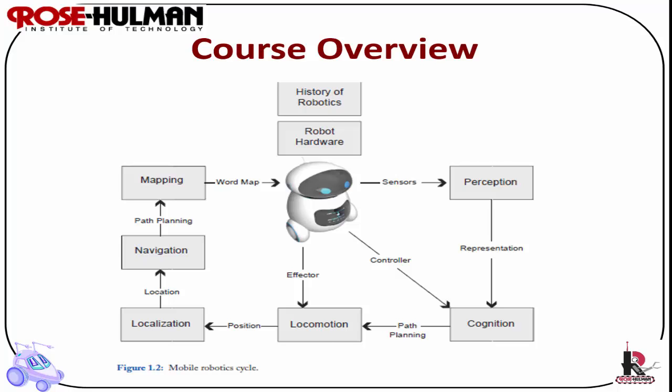Right now we're in the history of robotics and the robot hardware. Then we transition to sensors, perception and representation, as well as cognition and AI. And then we move to locomotion, localization, navigation and mapping. I'm proud to say this course is a very thorough introduction to mobile robotics — students who graduated and went on to grad school told me the topics covered here are typically the first course they take to get ready for graduate level research work.